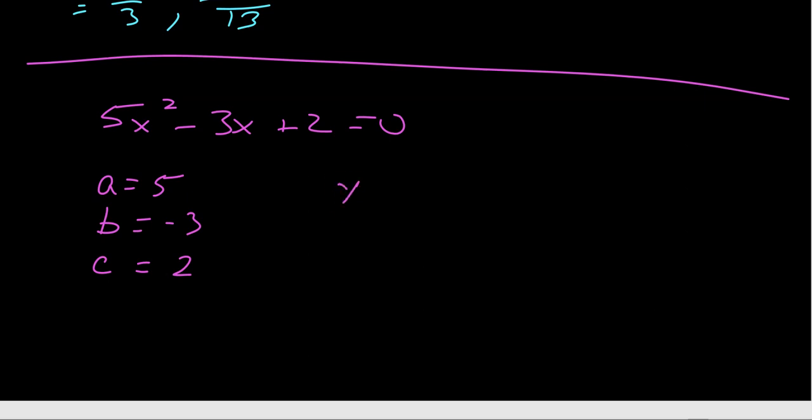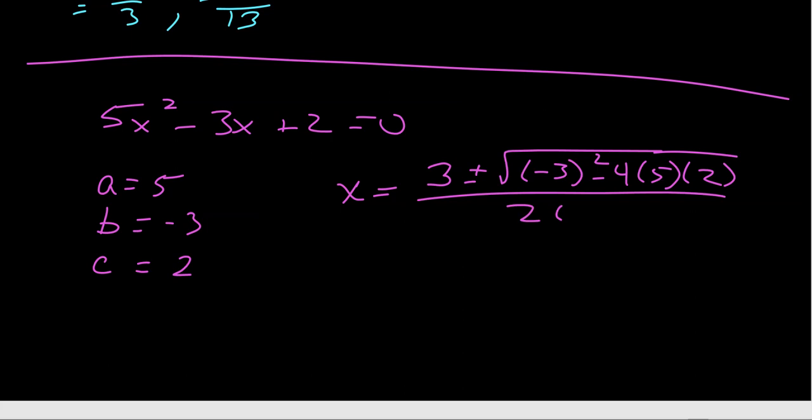So when I go to make my substitutions, then what I'm going to have: x equals the opposite of b, so that'd be a positive 3, plus or minus the square root of b squared minus 4ac, over 2 times a.